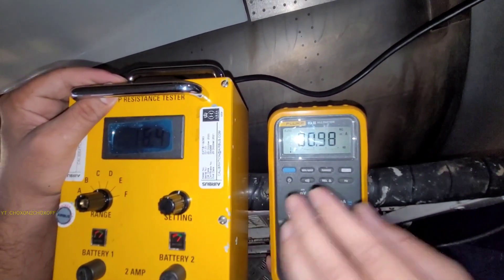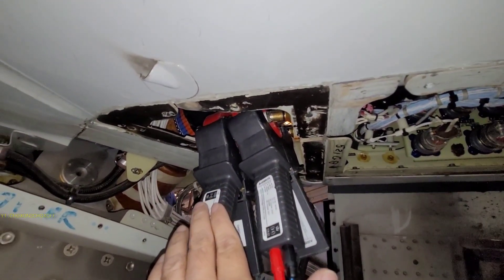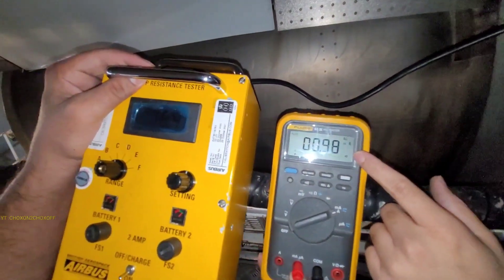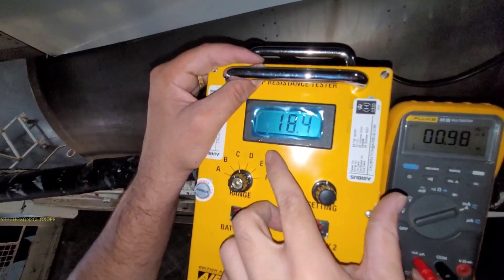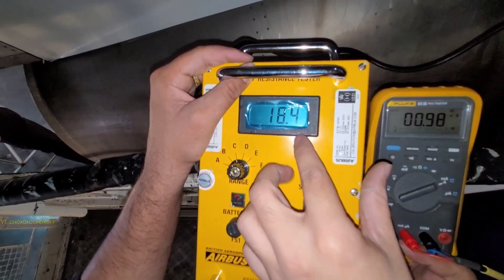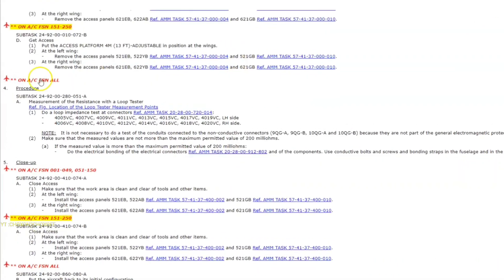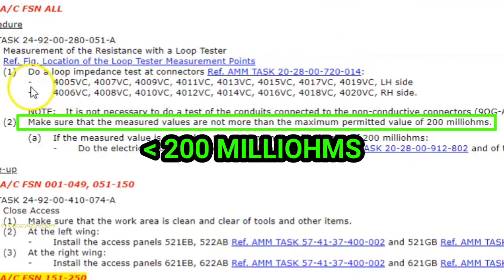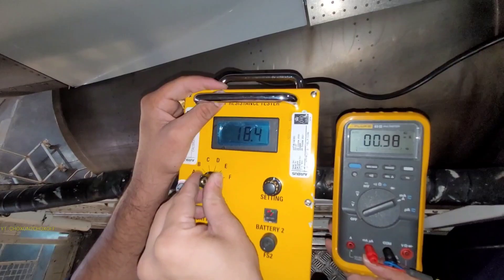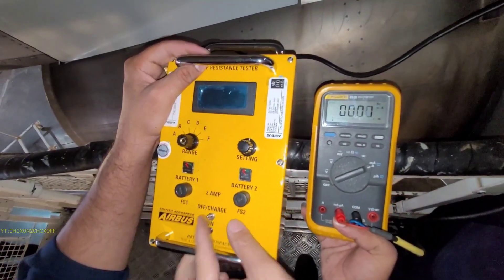So that's fine. So here our tester is inducting 1 amp current and this is measuring 1 milliamp. So when we are on 1 milliamp we will take the reading. So this reading is our loop resistance which is 18.4 milliohms. So this is well below the threshold level, so that's good.